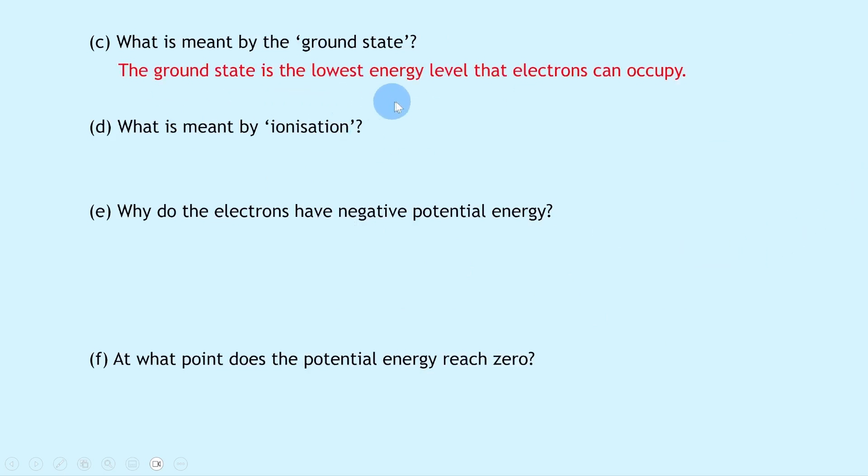Remember from the notes that the ground state is the lowest energy level that electrons can occupy. Part D asks what is meant by ionization. Remember we saw this firstly in the National 5 radiation topic and then again in Higher.